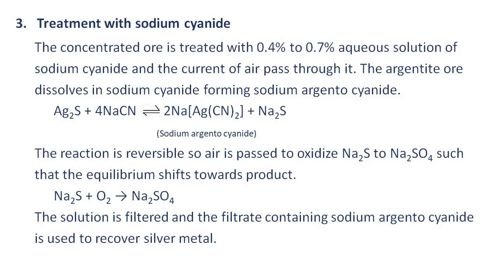Treatment with sodium cyanide: The concentrated ore is treated with 0.4% to 0.7% aqueous solution of sodium cyanide and a current of air is passed through it. The argentite ore dissolves in sodium cyanide forming sodium argento cyanide. This reaction is reversible, so air is passed to oxidize sodium sulfide to sodium sulfate, shifting the equilibrium towards the product. The solution is filtered and the filtrate containing sodium argento cyanide is used to recover silver metal.